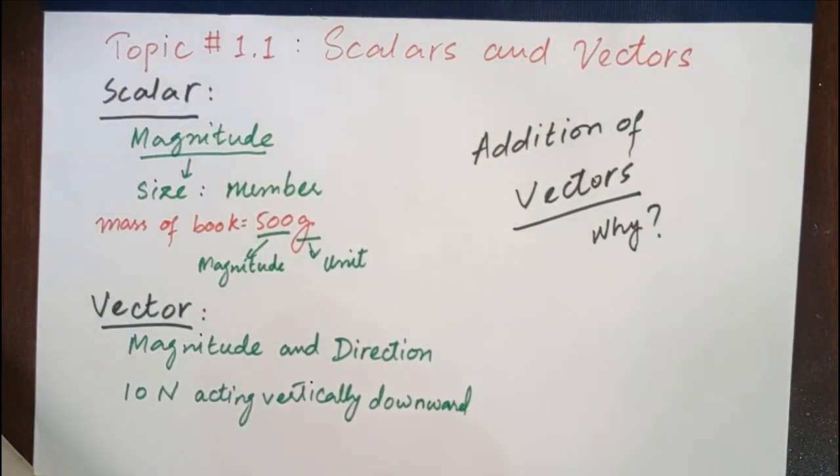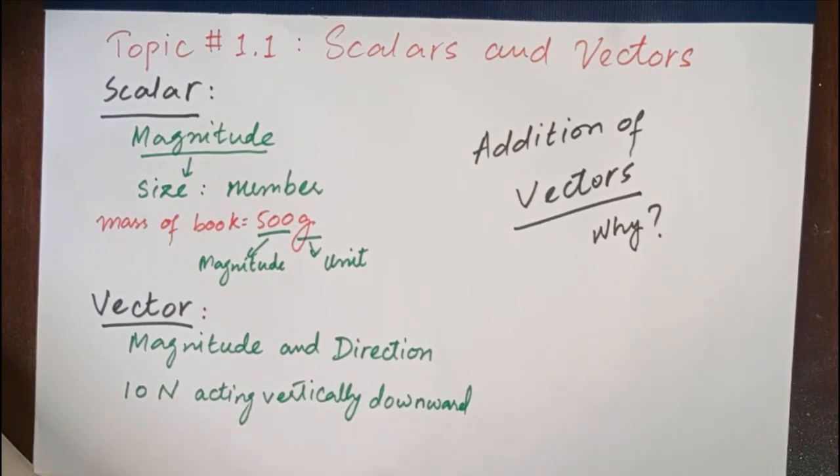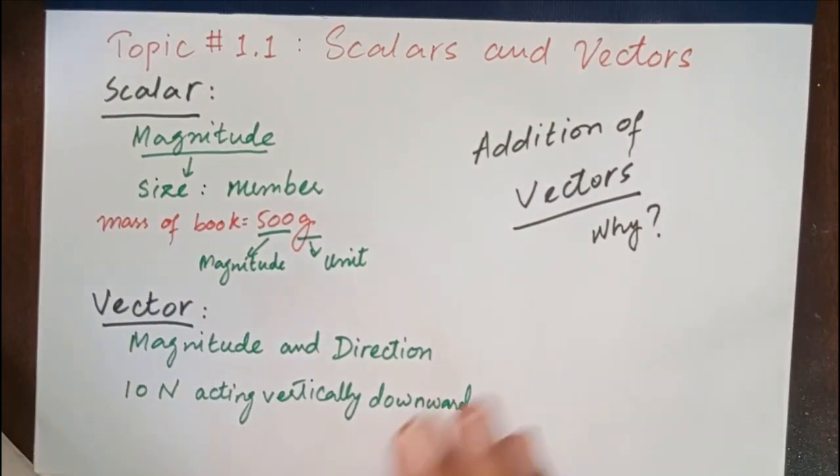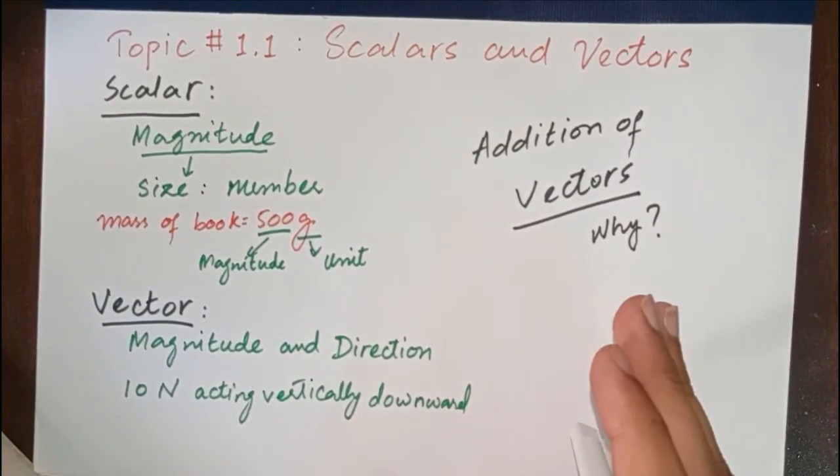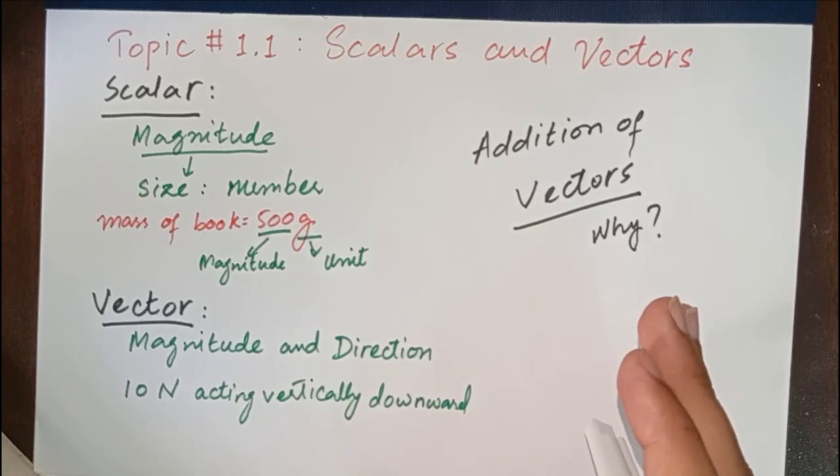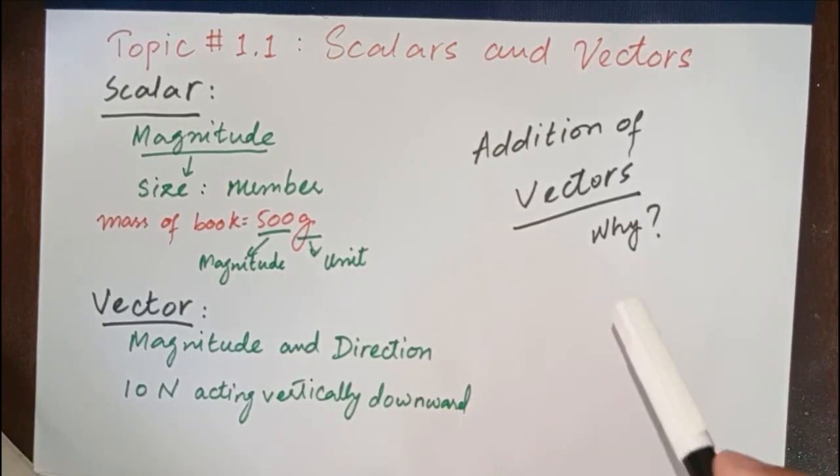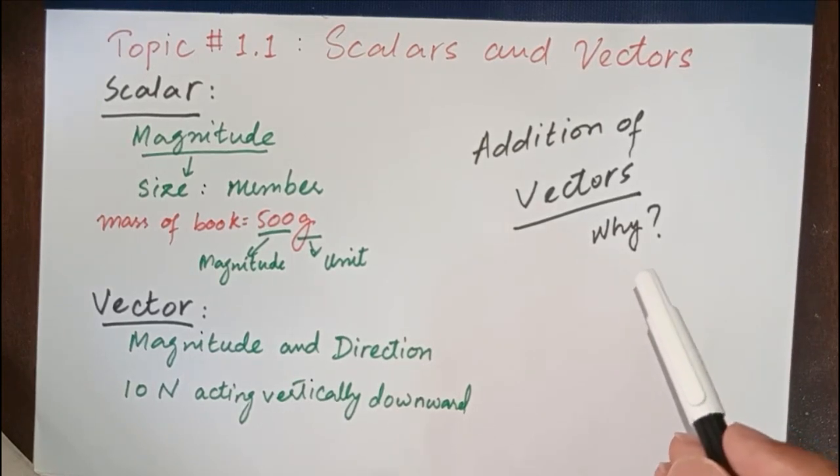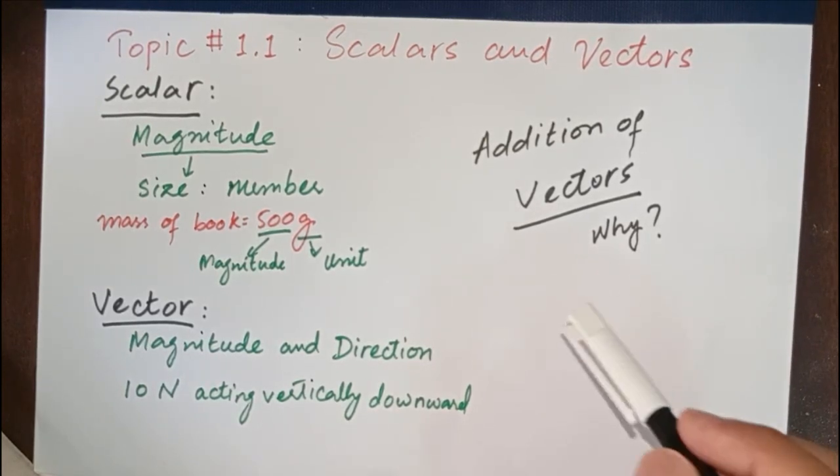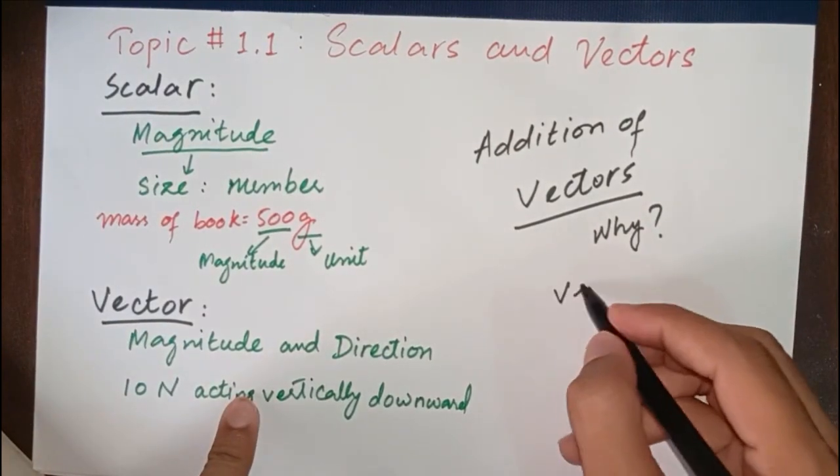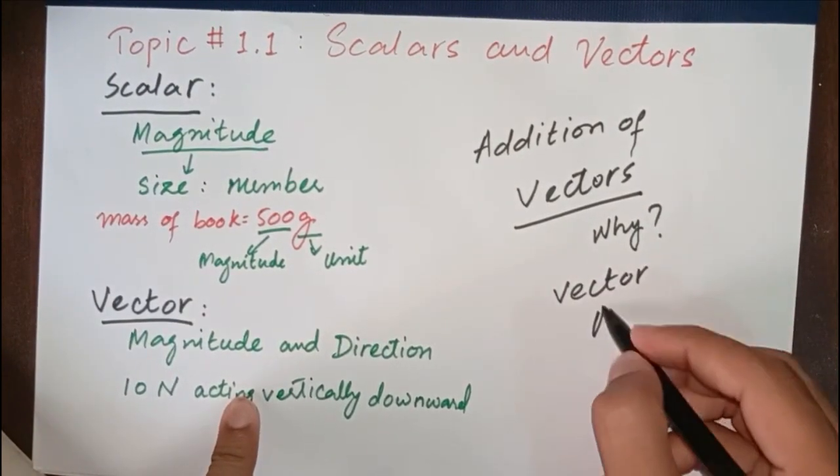Its answer is, scalars are added or subtracted by simple mathematics rules, while vectors are not. They are not supposed to be solved by simple mathematics. They have special techniques that we call vector algebra.